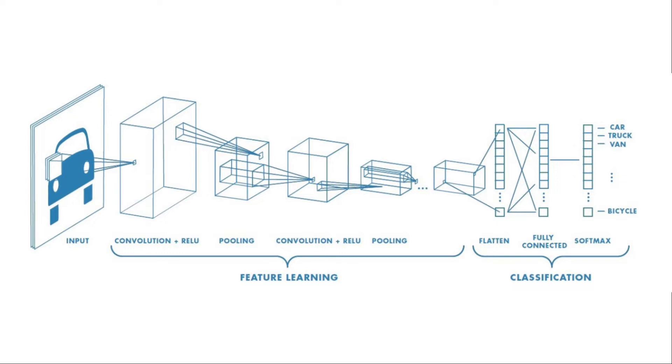And it turns out the style of an image can be described by the means and correlations across the different feature maps. Now for style extraction from your input images, we need to find the correlation between the features in each layer. But the question is, how do I find the correlation between these features?